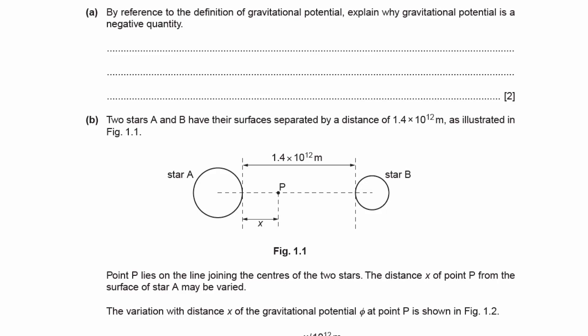By reference to the definition of gravitational potential, explain why gravitational potential is a negative quantity. So let's first go over the definition of gravitational potential. It's the work done per unit mass in moving an object from infinitely far away to a point in the field.